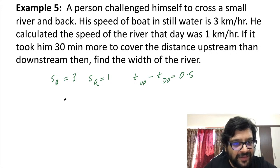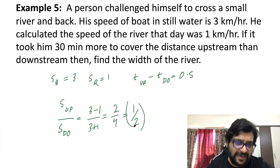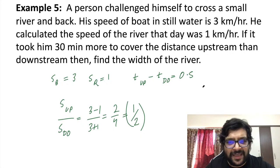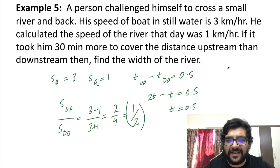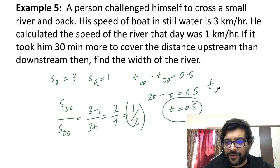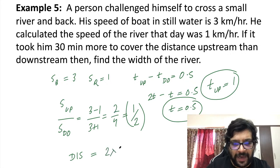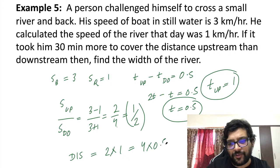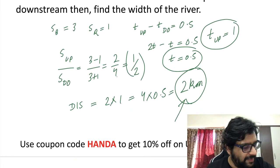Speed upstream = 3 − 1 = 2, speed downstream = 3 + 1 = 4, ratio 2:4 = 1:2. Since speed is in ratio 1:2, time taken is in ratio 2:1. So time upstream is 2T and time downstream is T, and their difference is T = 0.5 hours. Therefore time downstream = 0.5 hours, time upstream = 1 hour. Distance = upstream speed × upstream time = 2 × 1 = 2 kilometers.